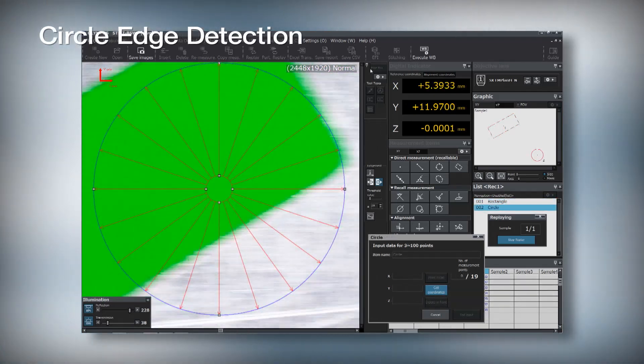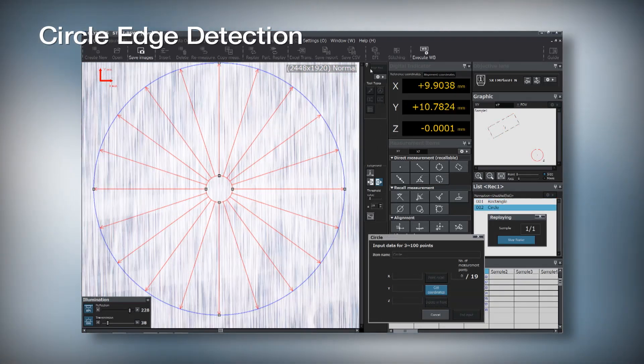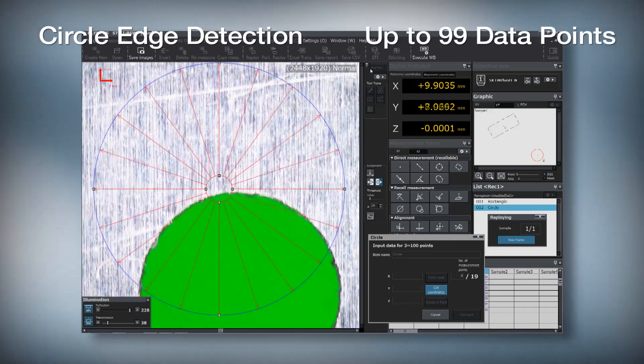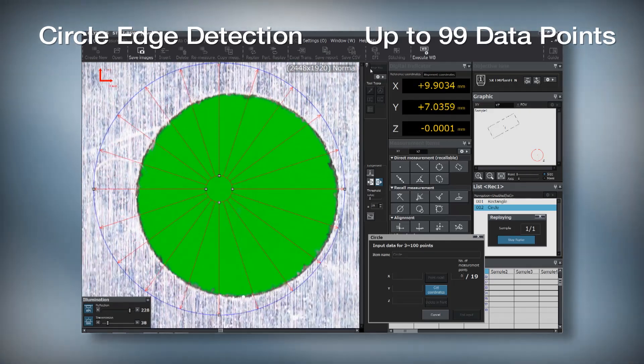Additional edge detection tools are available, including circle edge detection, which provides up to 99 data points for better measurement accuracy.